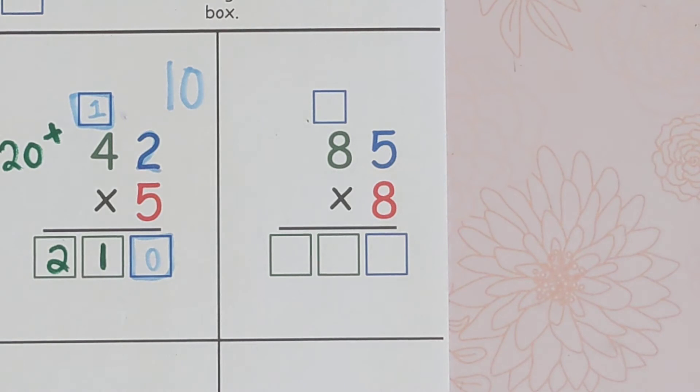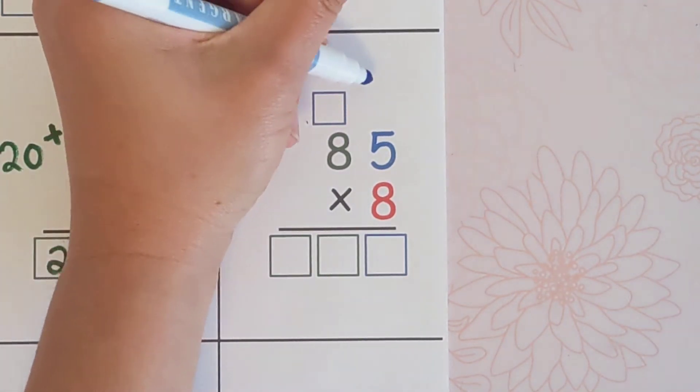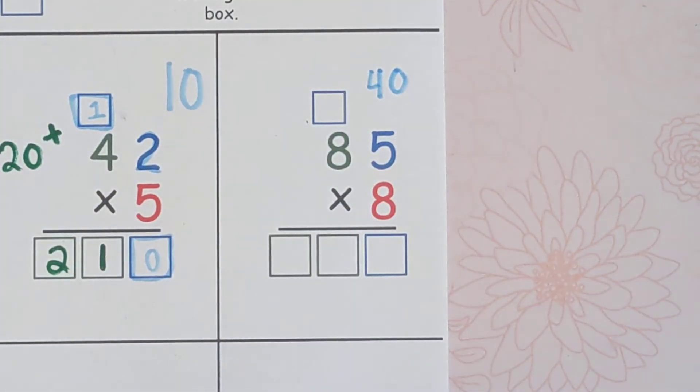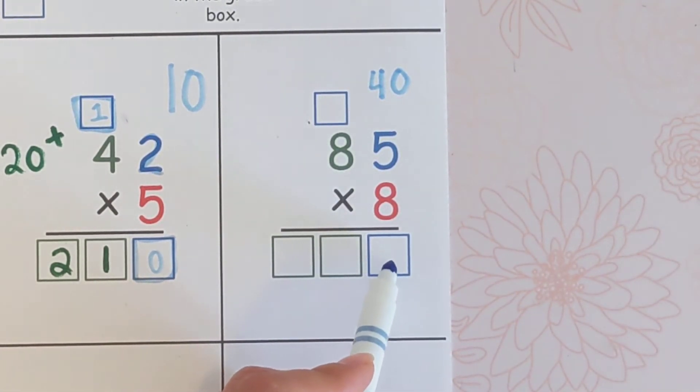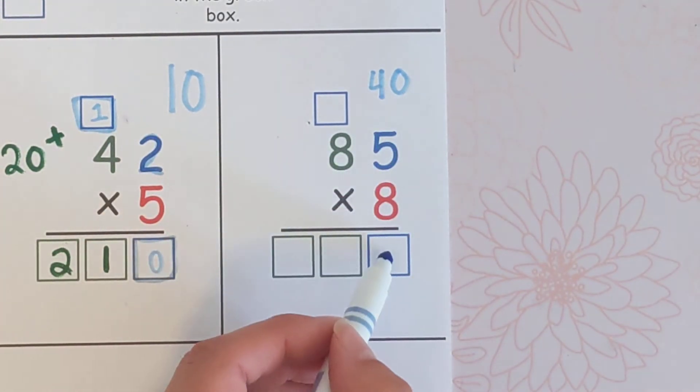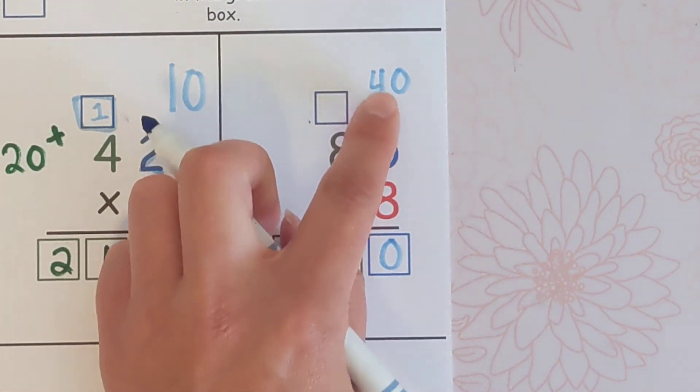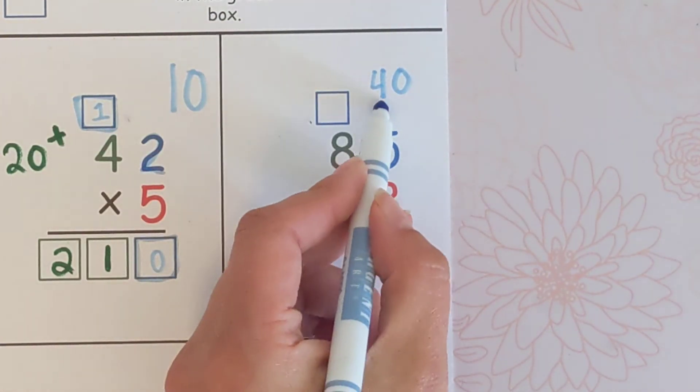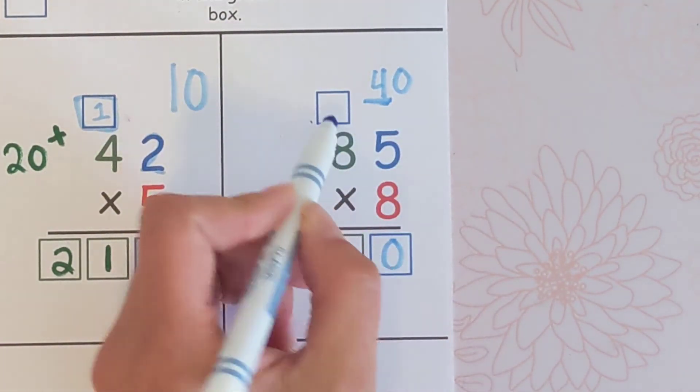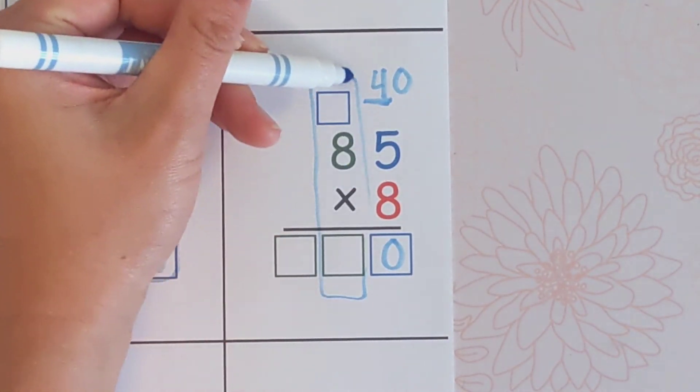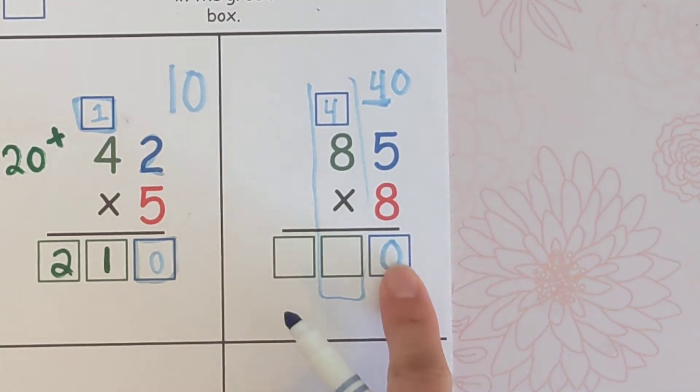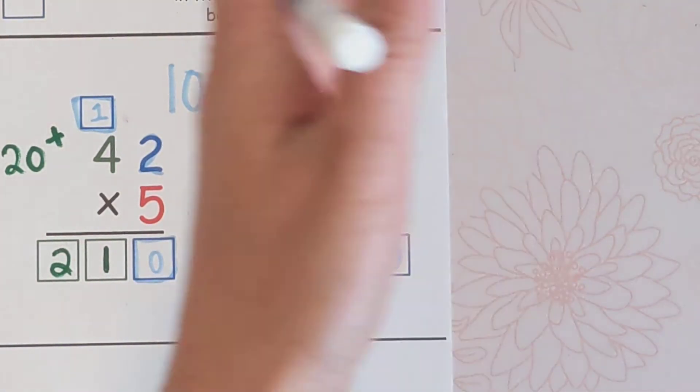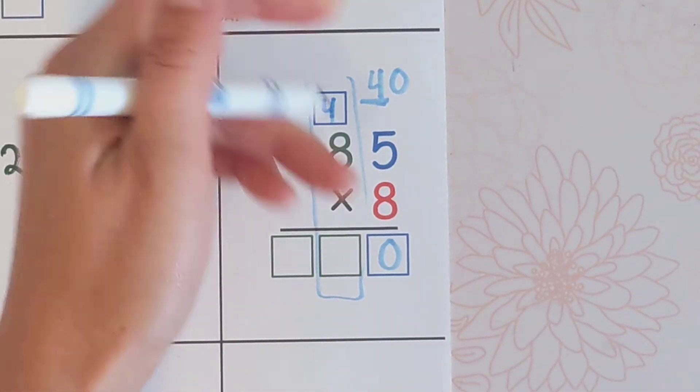So first we'll do 8 times 5. 8 times 5 is 40. I like to write it down here. Then I'll place it. 40 is too big to fit here. You need one digit here, not 2. So we're just going to put the rightmost digit here, the 0, and carry the 4 over because that 4 is in the tens place anyway, so it belongs here in the tens place. So you carry your 4 over, and that's the same as if you were adding and you get a number that's too big. You just carry the leftmost digit over.